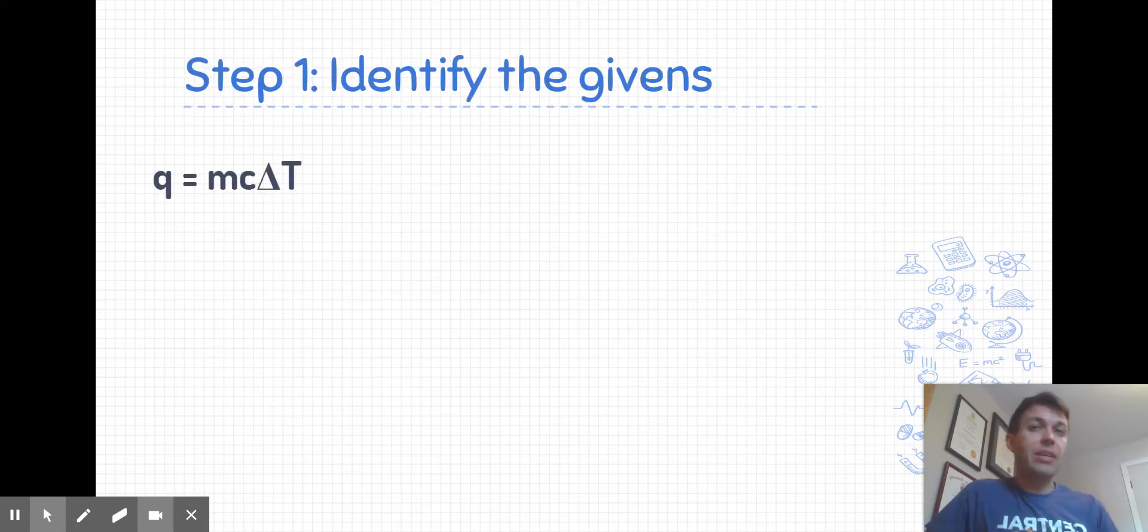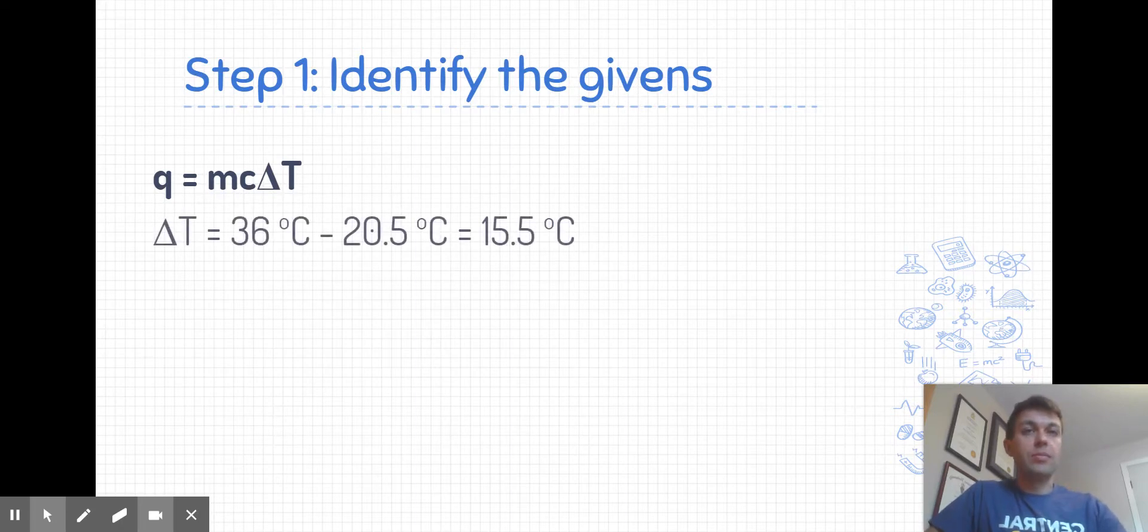If we want to calculate the heat, we need to know the mass, the specific heat capacity, and the temperature change. Well, let's start with the temperature change. The temperature has increased, so that must mean that the surroundings has gained energy. 36 degrees minus 20.5 gives us 15.5 degrees Celsius.